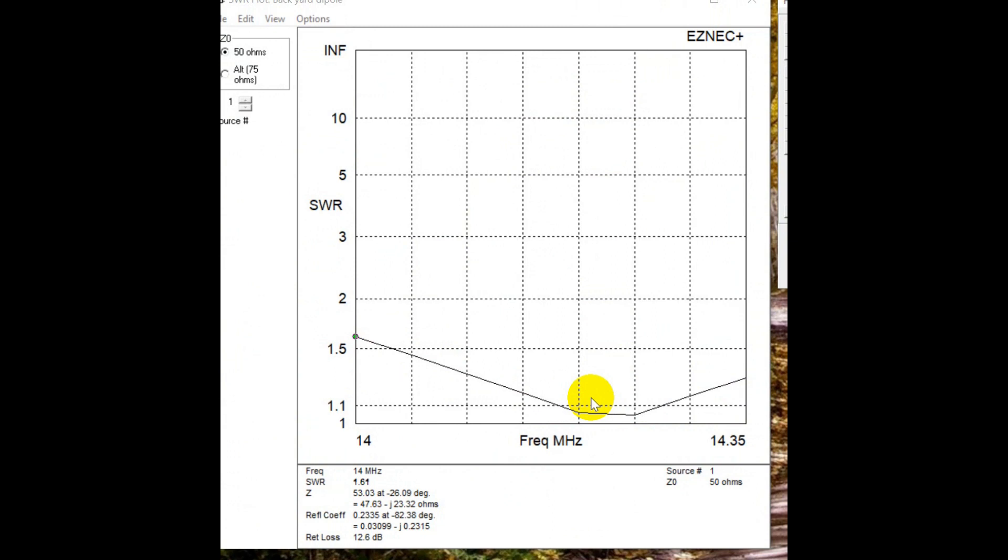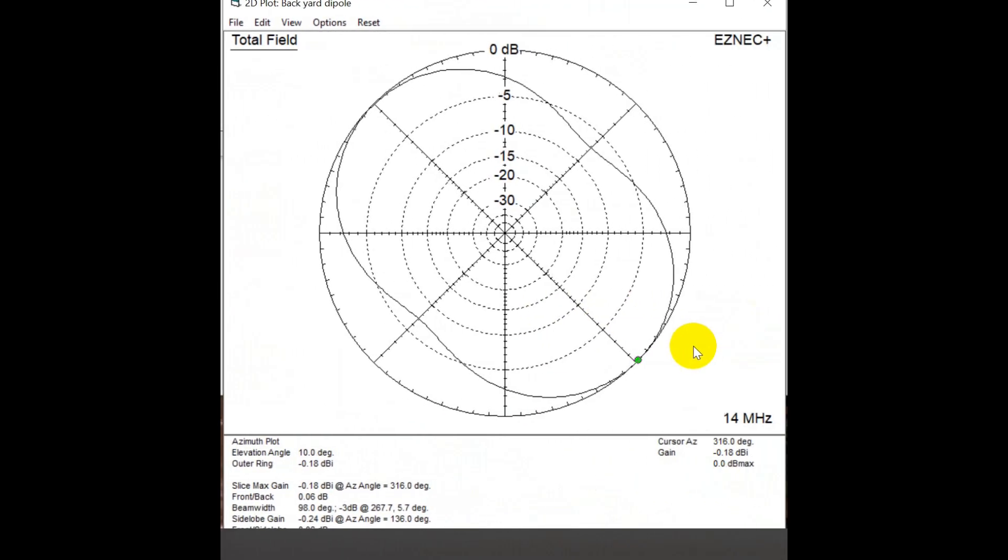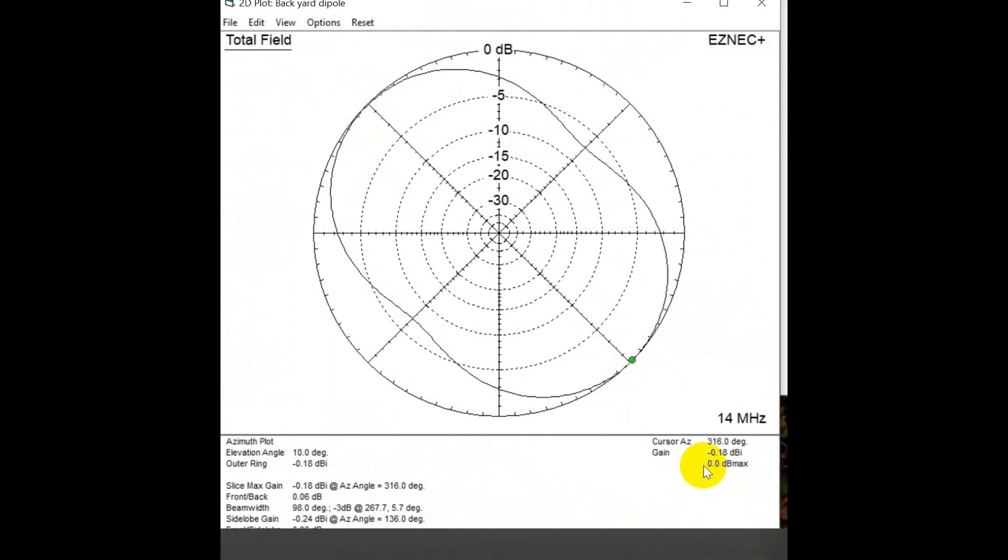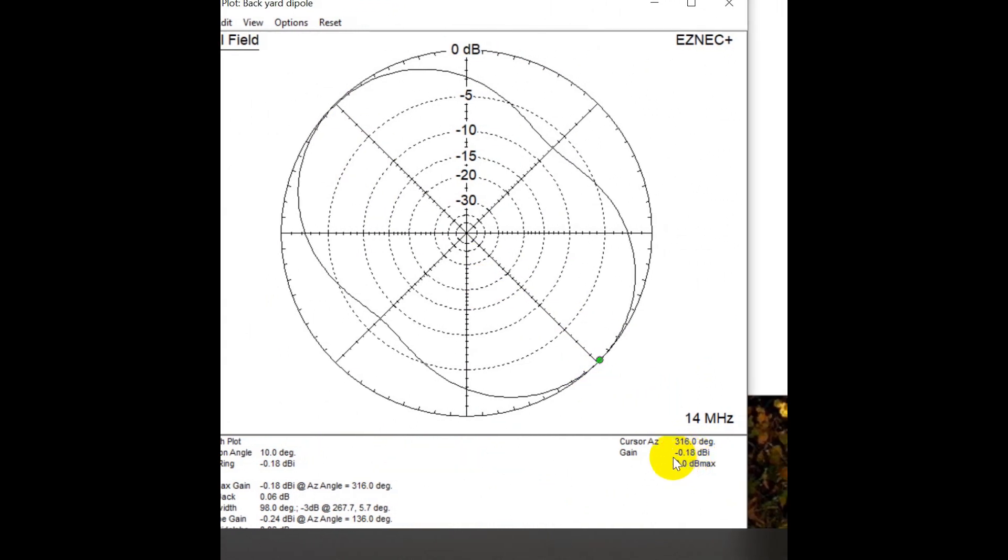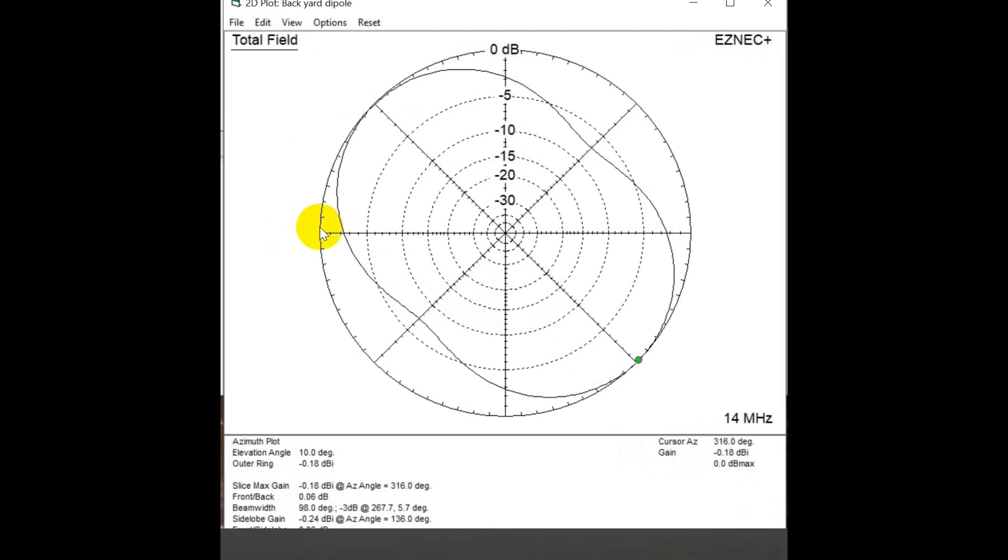Now you can, of course, play with that a little bit to see, move that to the part of the band that you like the most. But being under 1.5 for most of the band is excellent. You're not going to do much better. This is the pattern. It's at exactly 45 degrees now. And notice here that there is a little bit of a gain loss minus 0.18 dBi. A little bit of a gain loss. However, the pattern is very nice.